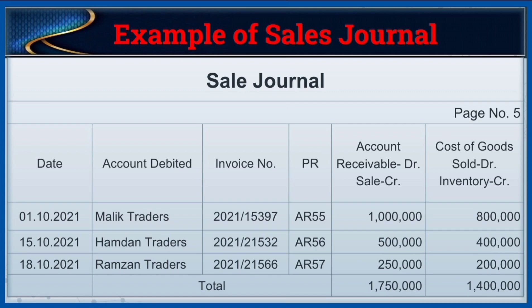Explanation of columns. Number 1, date: this column records the date on which the sale is made, normally the same date as written on the invoice. Number 2, account debited: this column records the name of customers whose individual accounts are maintained in the accounts receivable subsidiary ledger. Number 3, invoice number: the sales invoice number is written here. Number 4, post reference (PR): entries in the sales journal are posted daily to relevant accounts in the accounts receivable subsidiary ledger; the PR column records the account numbers of those individual accounts. Number 5, accounts receivable and sales: the net amount receivable from the customer is written here; in the general ledger, accounts receivable is debited and sales account is credited by the total of this column.